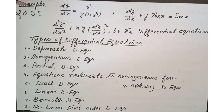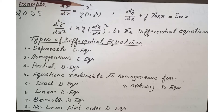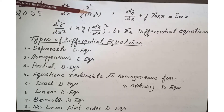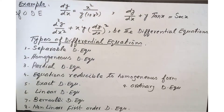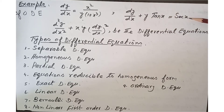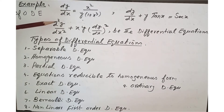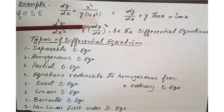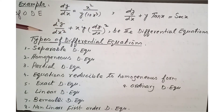Examples of differential equations: dy by dx equals x squared over y times (1 plus x cubed). A second example is dy by dx plus y tan x equals sec x. And d²y over dx² plus xy times (dy by dx)² are also differential equations.